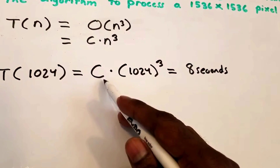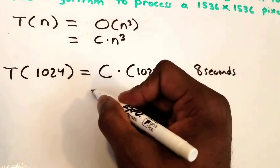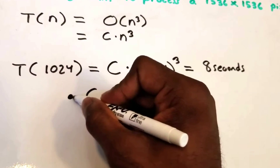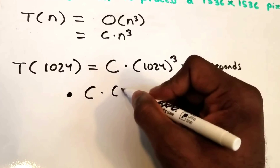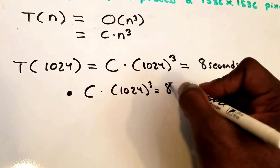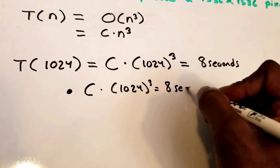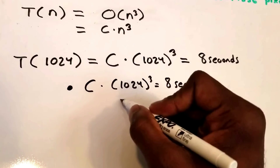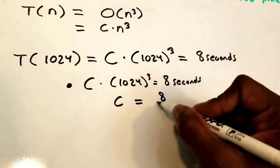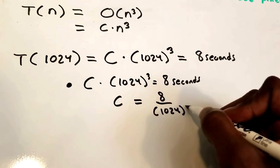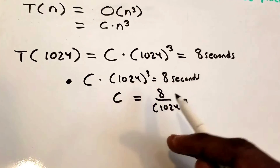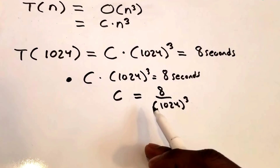Now we solve for our constant value c. We have c × 1024³ = 8 seconds, and therefore using algebra, c = 8 divided by 1024³. Now we know what c is equal to.